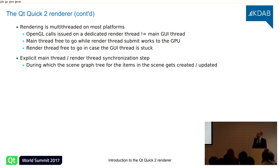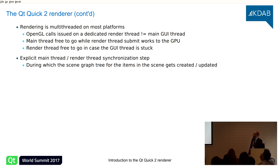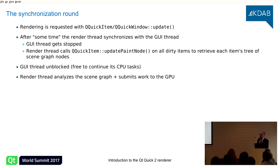Of course, introducing threads introduces a synchronization problem. There must be a step where the main thread and the render thread communicate to build and update the scene graph data structure. In Qt Quick, this synchronization between the main thread and render thread happens in an explicit synchronization step — a moment where one thread is stopped, the other updates its data structures, and then the first thread can continue.